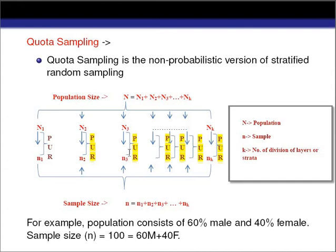I hope people now understand the differences and similarities between quota sampling and stratified sampling. Now the question arises: how do we determine the size of the sample for different strata? In quota sampling we generally use the concept of proportion. Also, the same procedure of stratified random sampling is followed when dividing the strata — units within a stratum are homogeneous, but units between strata are heterogeneous.